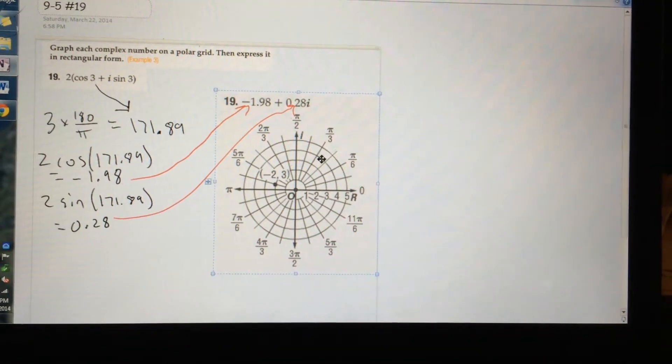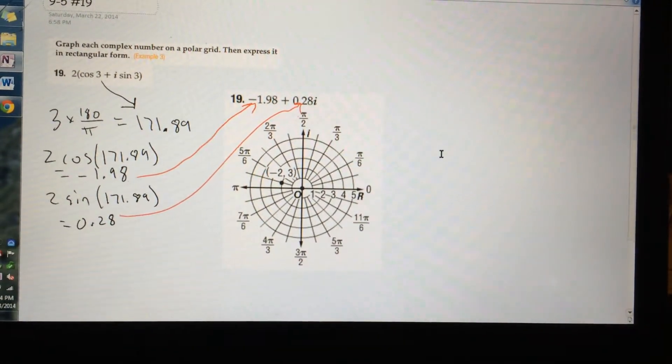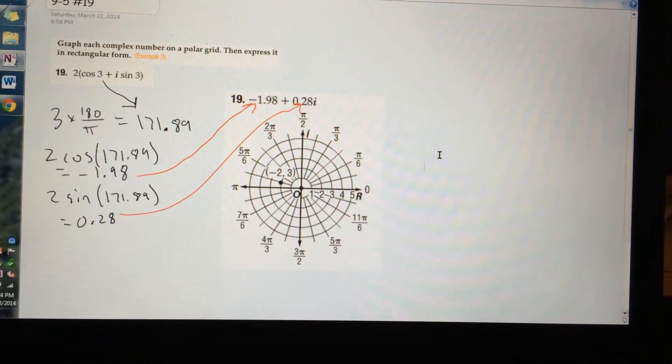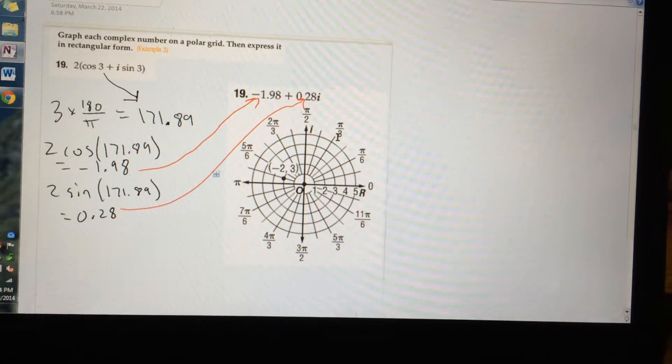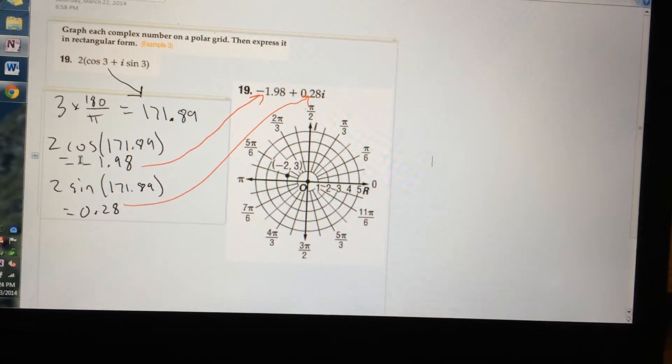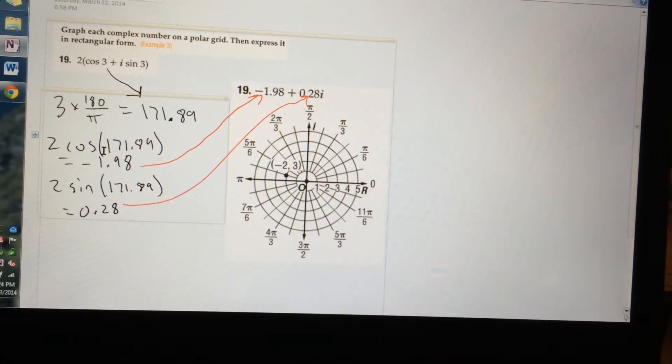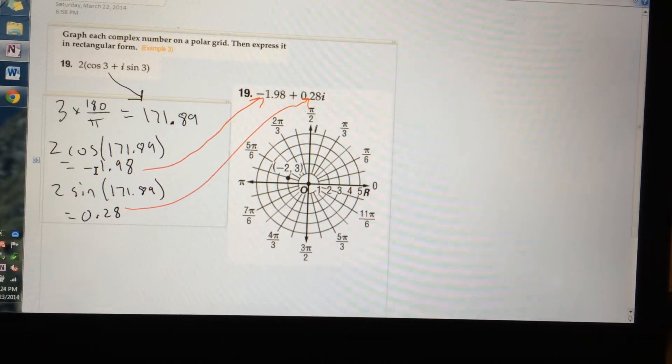Now to find the rectangular form, you want to multiply by cosine and sine. So it's r cosine θ and r sine θ. So the r, which is 2, cosine θ, which is 171. When you do that, you get negative 1.98.